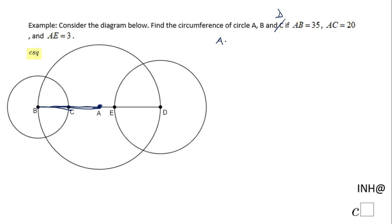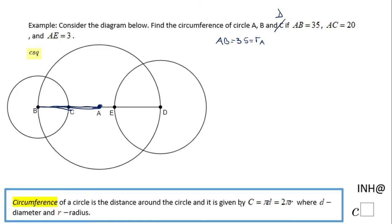AB is given to us as 35, that is the radius of circle A. If we know the radius we can find the circumference using the formula circumference equals 2πr.